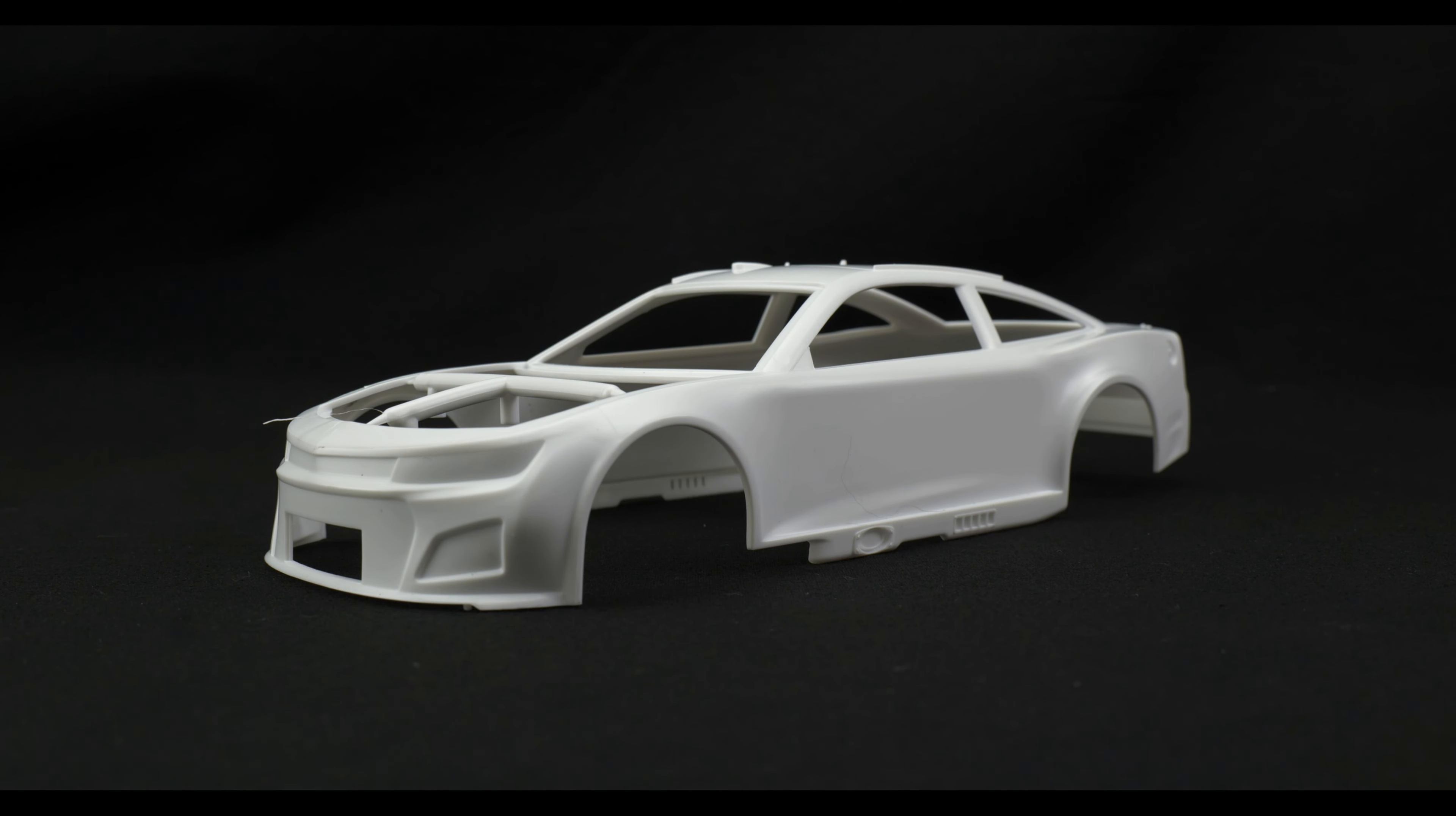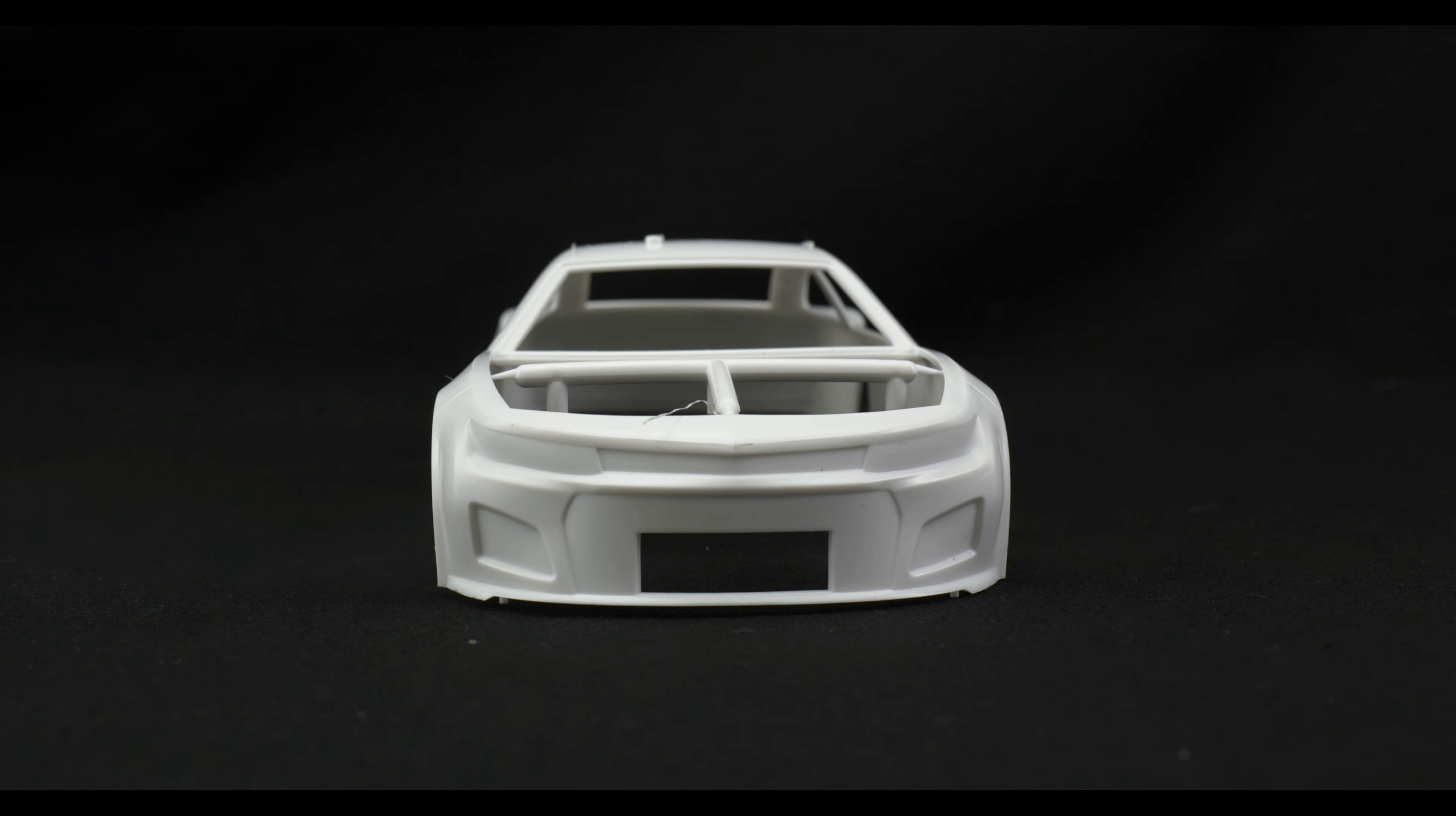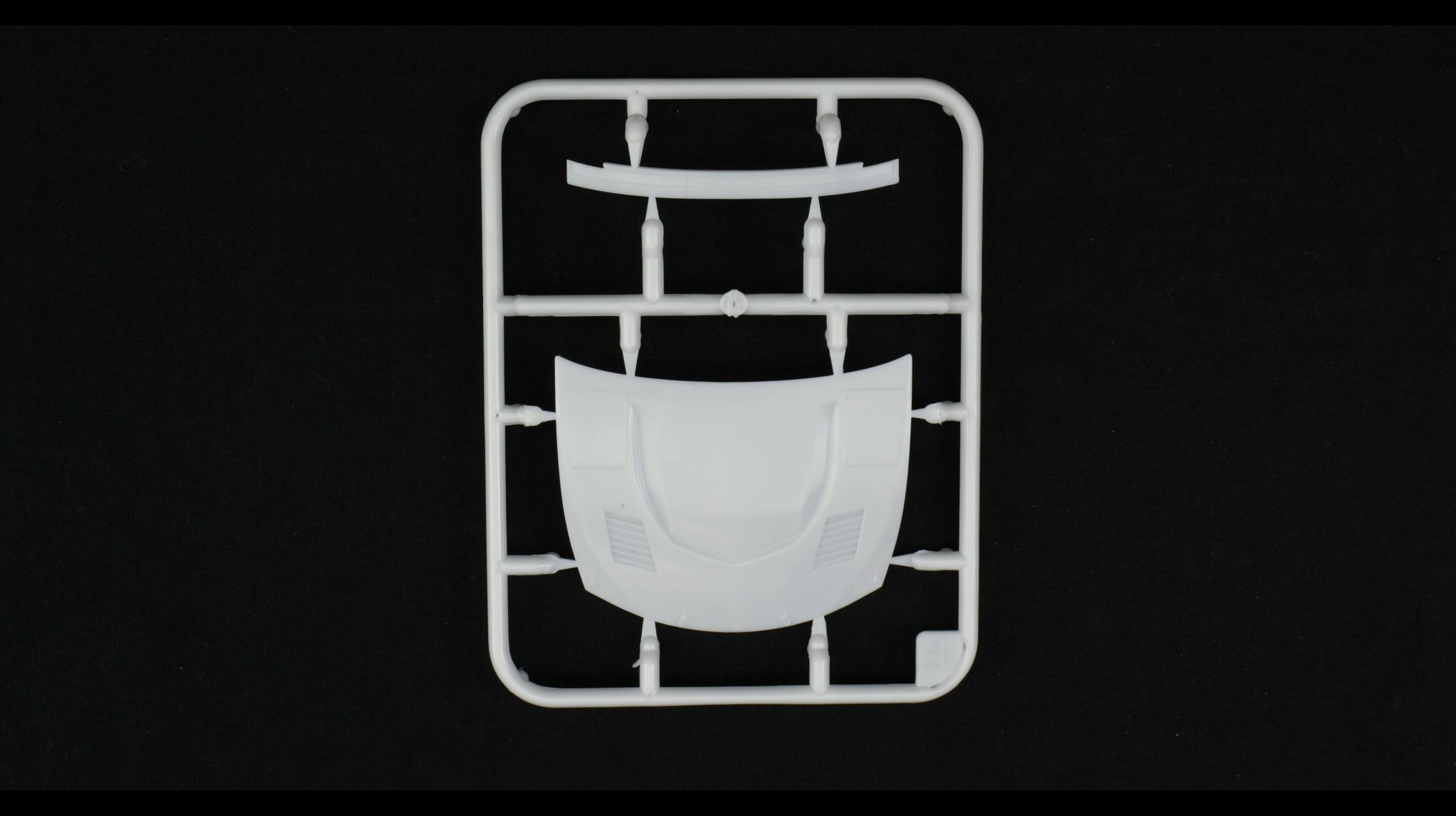Getting started with the body. As you can see, it is molded in white. Now we're going to take a look at Parts Tree F, which is going to be the hood and low down spoiler.